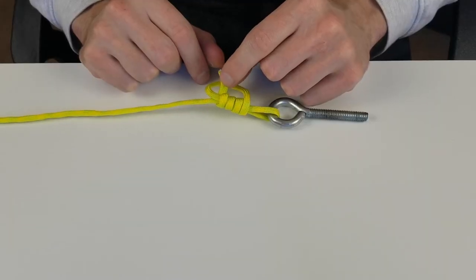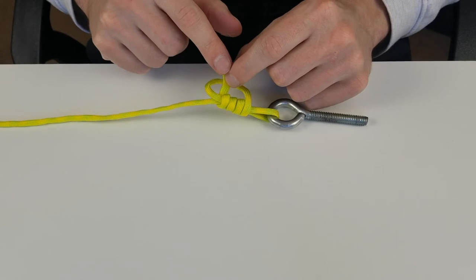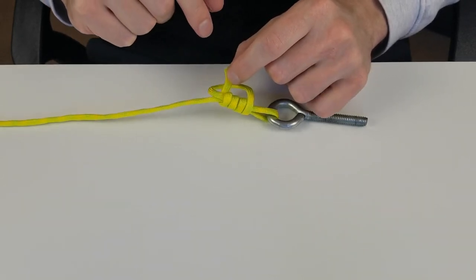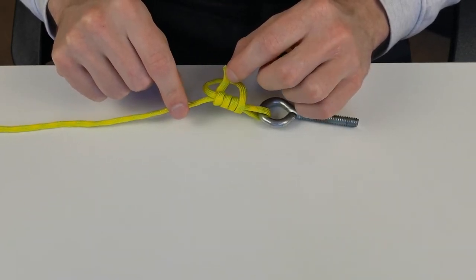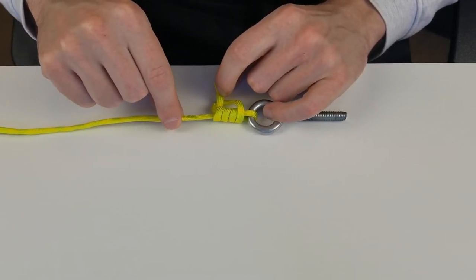You should have something that looks just like that, and you'll want to hold your tag in right here because you don't want it to go back through the loop. All you have to do now is grab the main part of your line and you can slowly start pulling it and then everything's going to tighten down just like that.